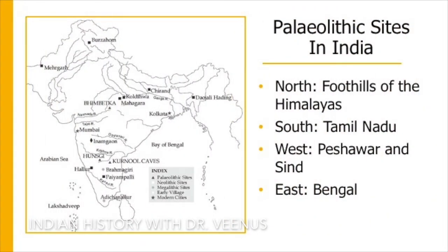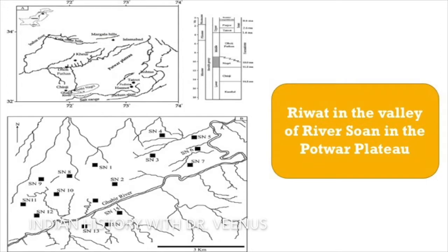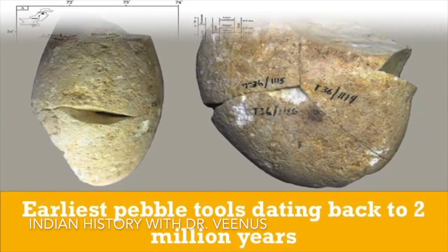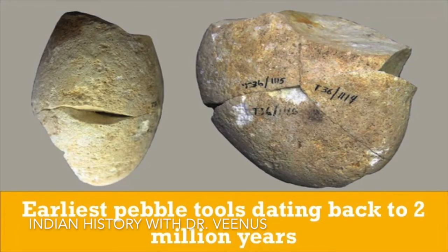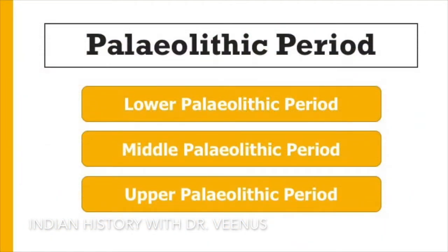Paleolithic sites occur in almost all parts of the Indian subcontinent, spanning the foothills of the Himalayas in the north through Tamil Nadu in the south, and from Peshawar and Sindh in the west to Bengal in the east. In the north, Rawat in the valley of River Soan in the Potwar Plateau has reported the earliest pebble tools dating back to 2 million years. The Paleolithic age is further characterized into three parts: Lower Paleolithic, Middle Paleolithic and Upper Paleolithic periods.